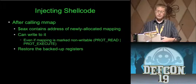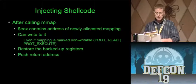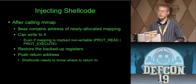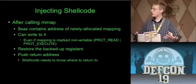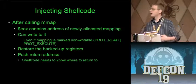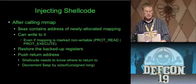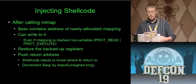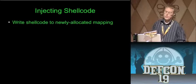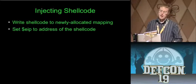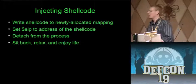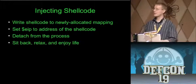We restore the backed-up registers as if nothing happened. We push a return address onto the stack so the shellcode knows where to return control to — Apache was probably sitting there listening for connections, and we want our shellcode to run and then have Apache continue normally. We decrement ESP by 4 bytes (32-bit) or 8 bytes (64-bit) and copy EIP to ESP. We write the shellcode to the newly allocated mapping, set EIP to the location of the shellcode, detach from the process, sit back, relax, and enjoy life. We've just injected our shellcode and got it to run.